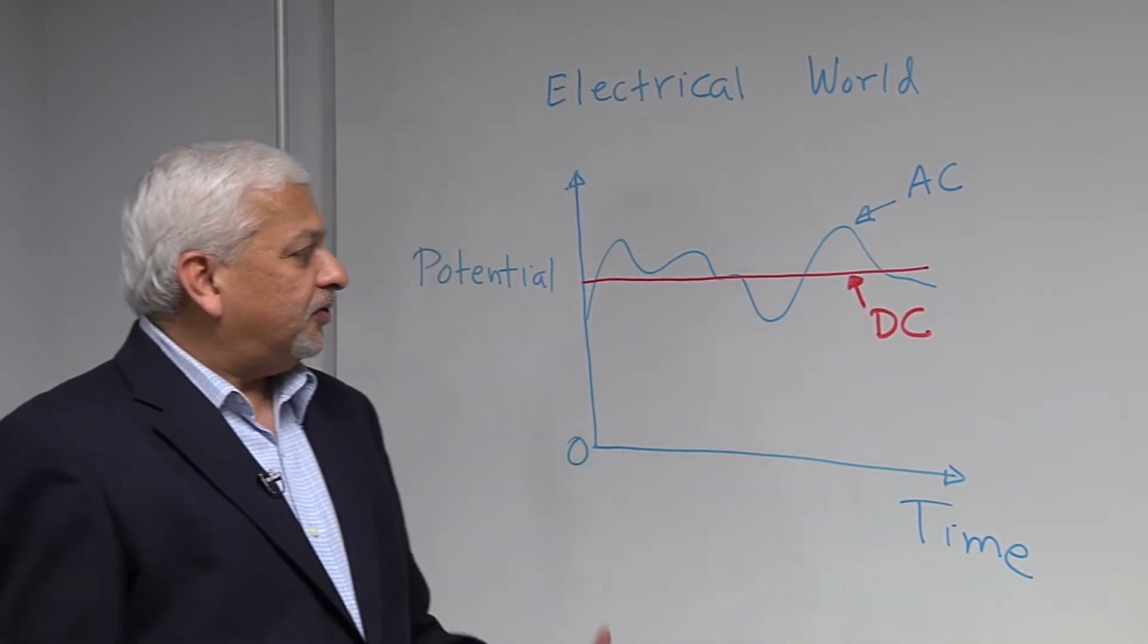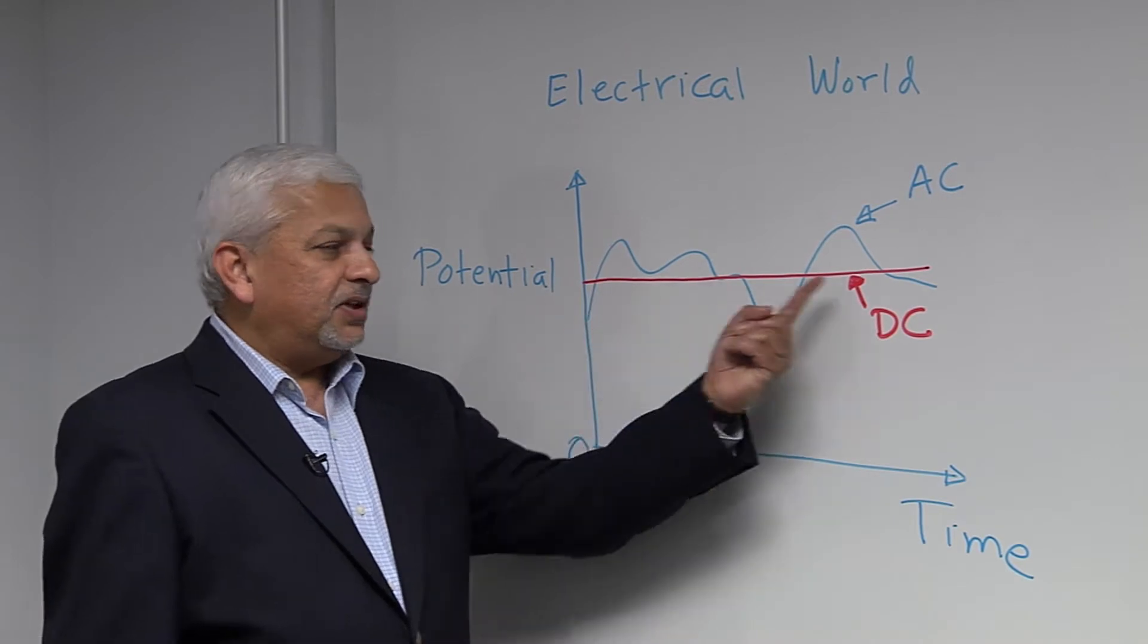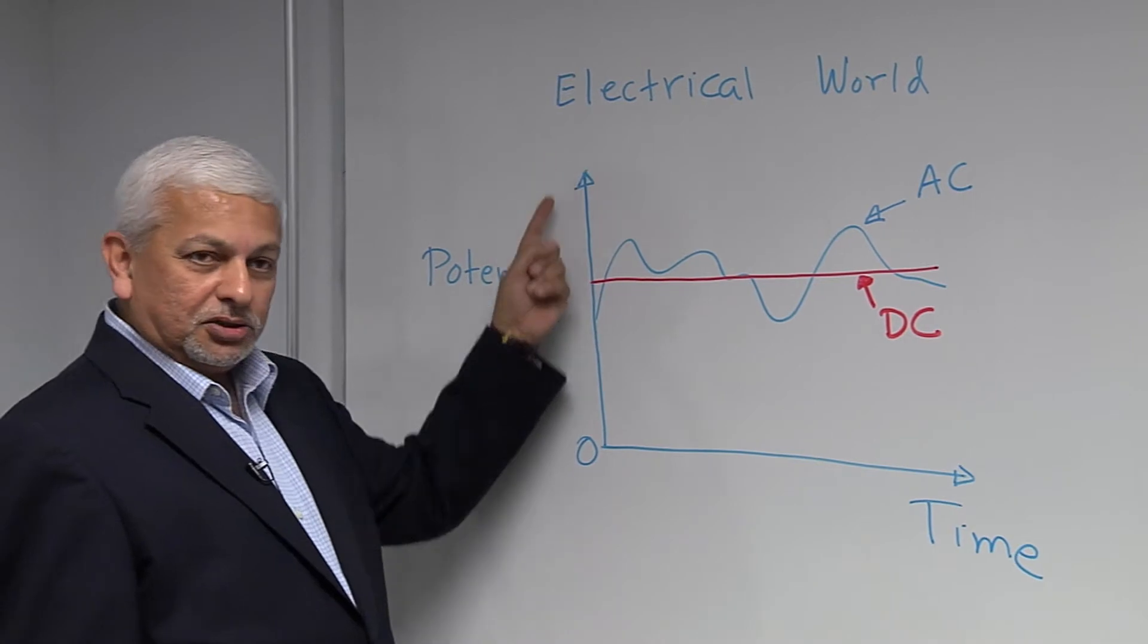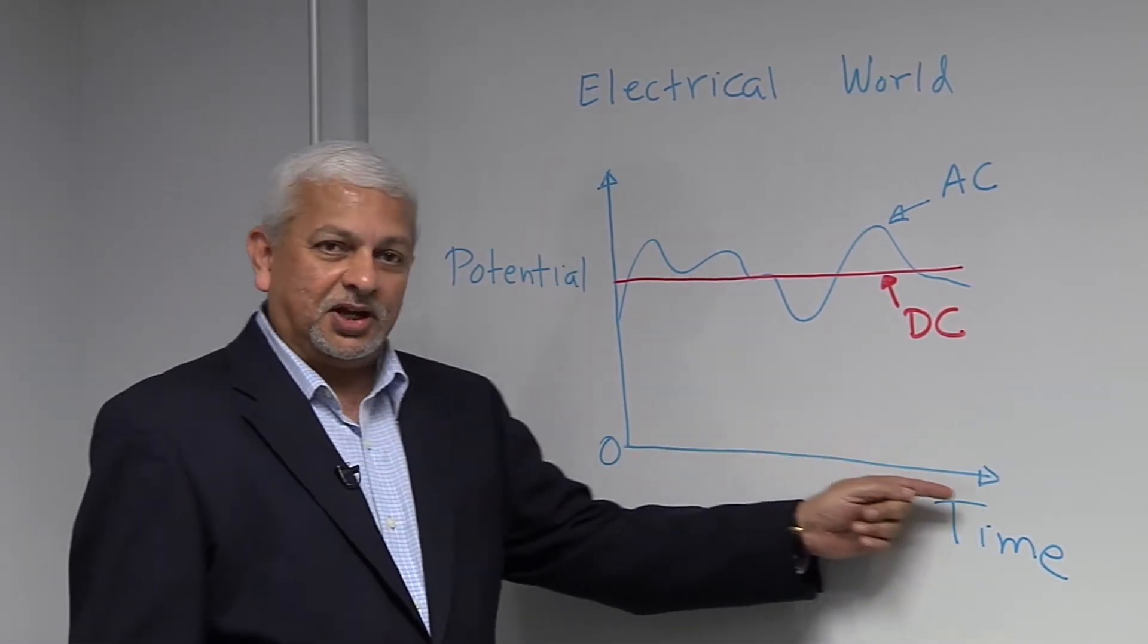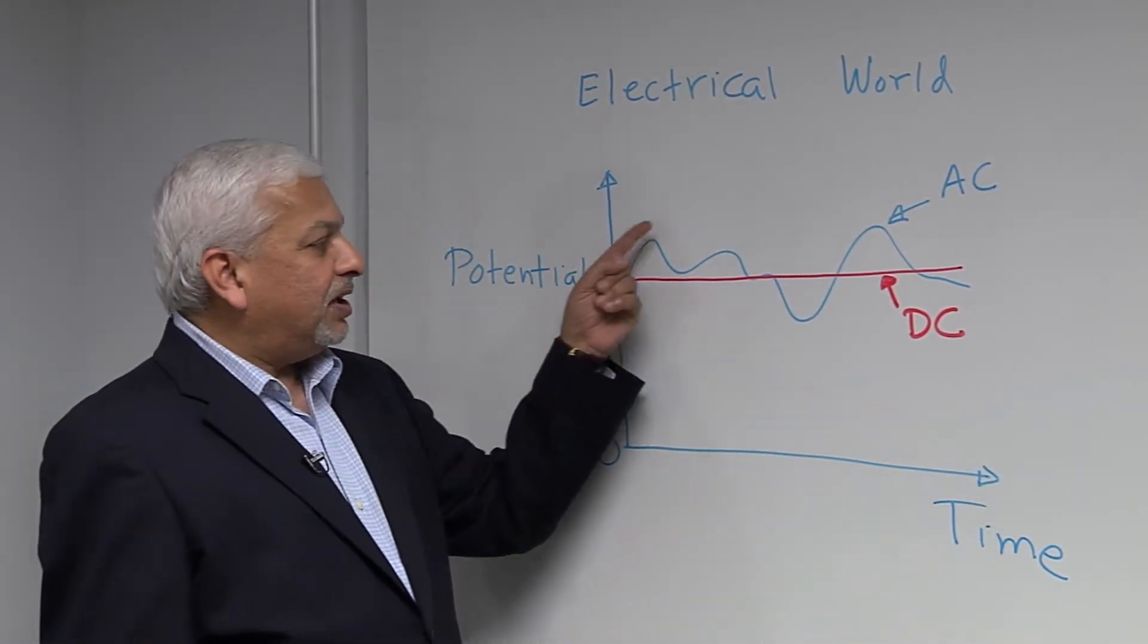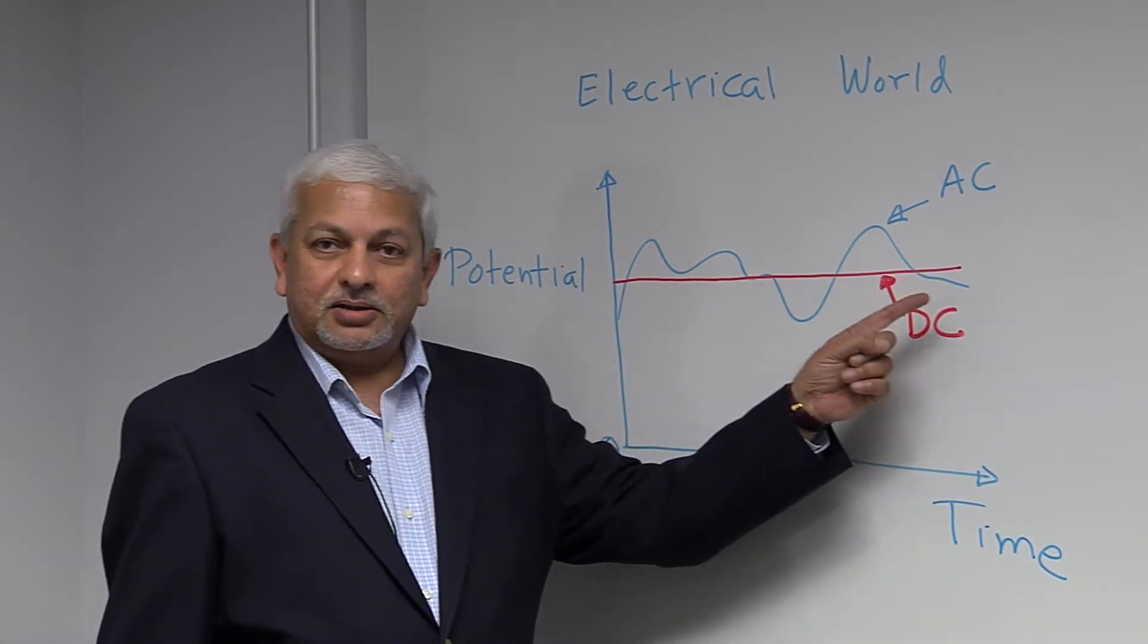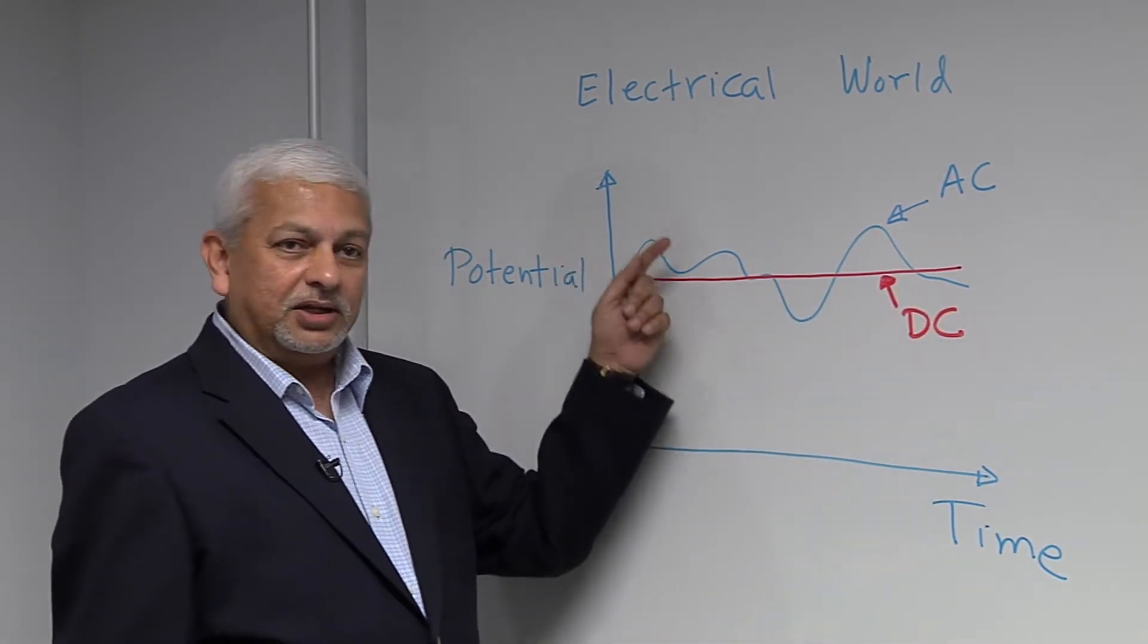The difference is that the DC shown in the red line here is the average value. Think of this as potential or voltage. Think of this as time. So when things vary as a function of time, you notice that the red line is a constant, but the blue line is changing.